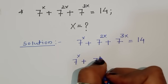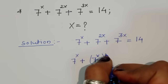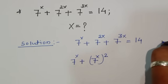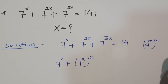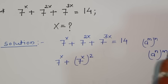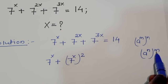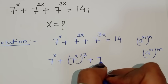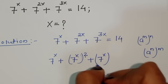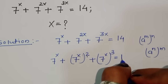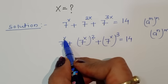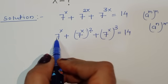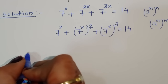We can rewrite 7^2x as (7^x)², and 7^3x as (7^x)³, because we know the formula a^(m×n) = (a^m)^n. So using this formula, we rewrite the expression with 7^x, (7^x)², and (7^x)³. The 7^x term is common, so we take it outside. Now we have three 7^x terms, so let's consider a substitution.